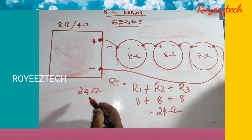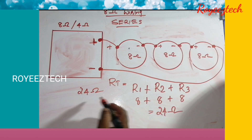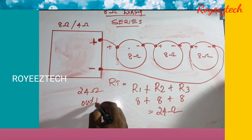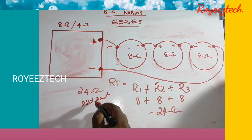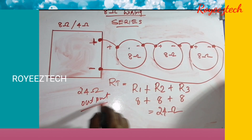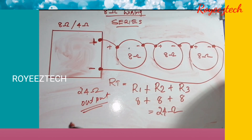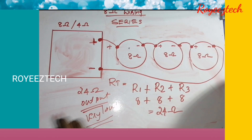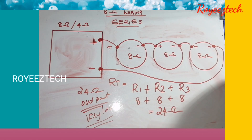At 24 ohms the load is very high, so there are no problems with amplifier damage. However, the sound output will be low because the impedance is too high for the amplifier's rated output range. This is the series connection configuration.